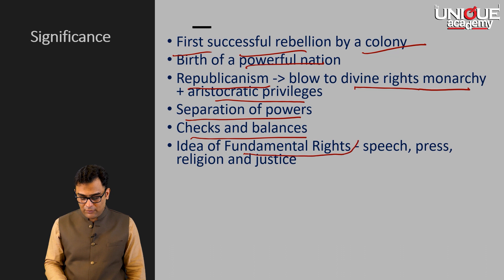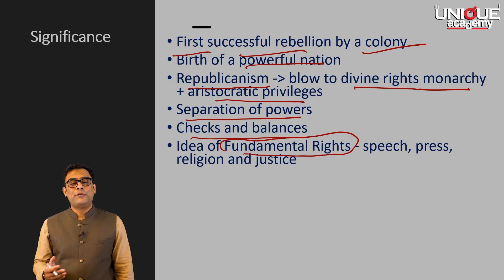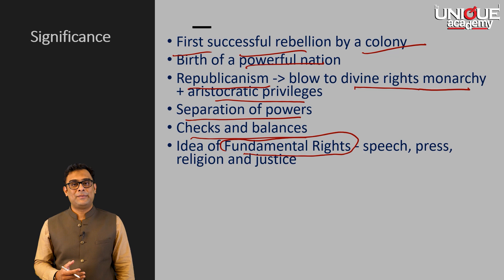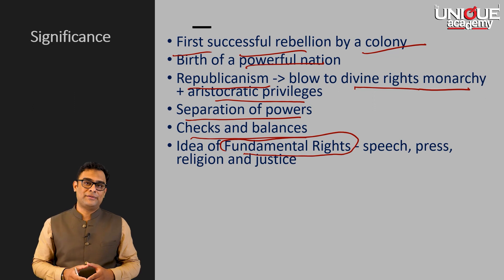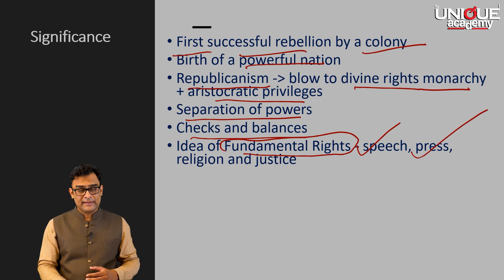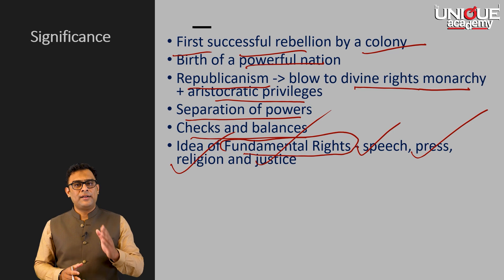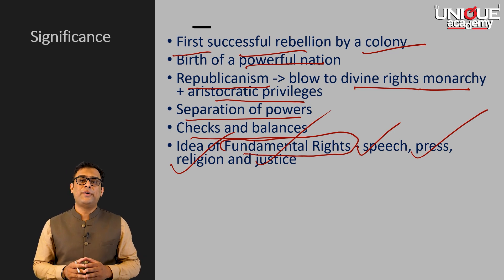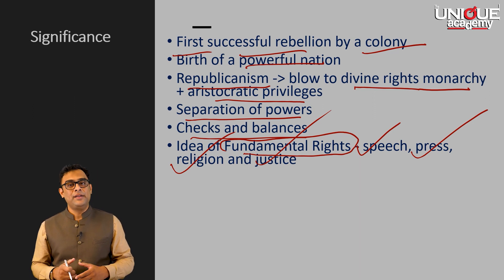It gave the idea of fundamental rights. In 1791, the first amendment was made to the American Constitution and the Bill of Rights was added. This Bill of Rights guaranteed certain rights in the Constitution itself, including speech, press, religion, and justice, among many others. This was the hard and fast commitment of the founding fathers of America to the humanist values that had inspired the American Revolution.